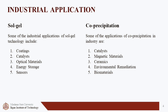Some of the applications of co-precipitation in industry include catalysts for the chemical industry, magnetic nanoparticles for data storage and medical imaging, and ceramic powders for electronics and insulation. It is also used in environmental remediation to clean up heavy metals and other pollutants from industrial wastewater and contaminated sites. It can even be used to make biocompatible materials for drug delivery and tissue engineering. Co-precipitation is a really versatile technique with lots of different applications.